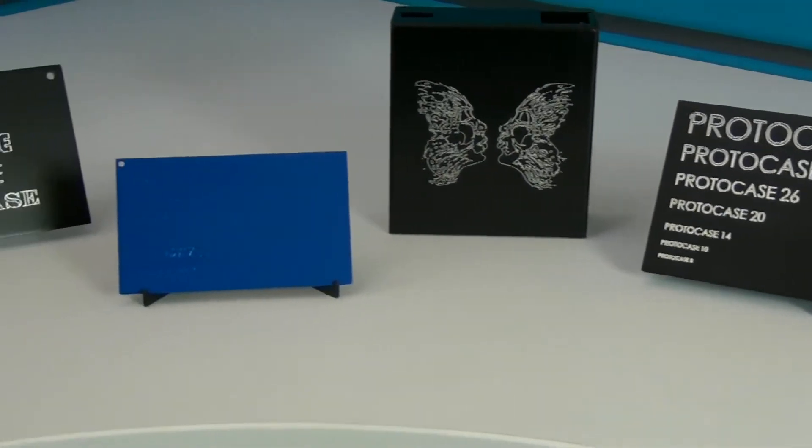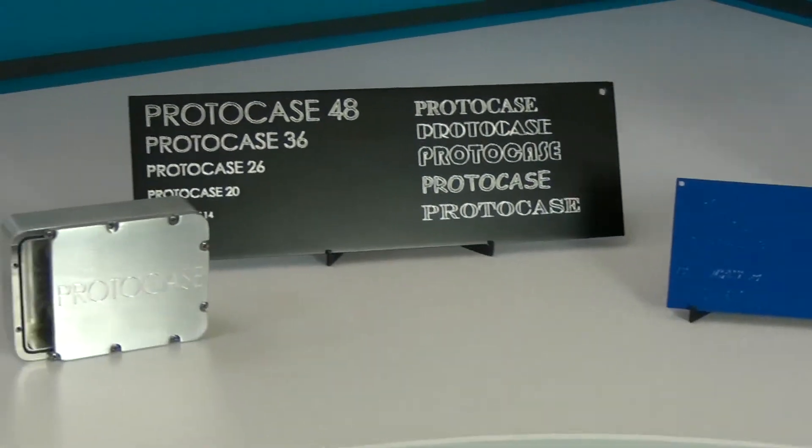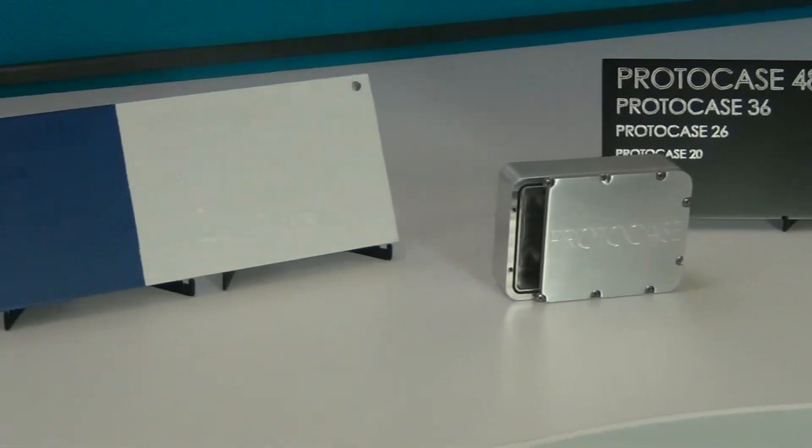Machined engraving is now available as a permanent marking finish at Protocase on your electronic enclosures, panels, and components built in 2-3 days with no minimum order requirements.